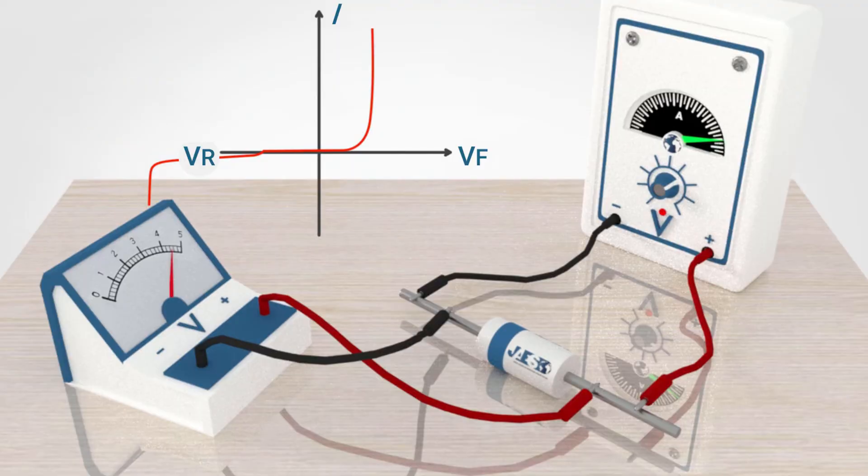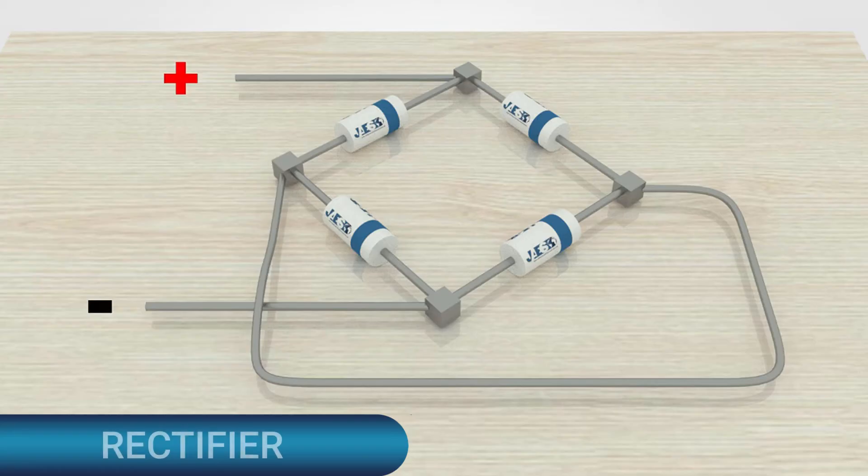The diode characteristic of running the circuit in one direction only can be applied to many electronic devices, such as the rectifier bridge.